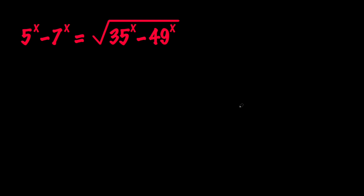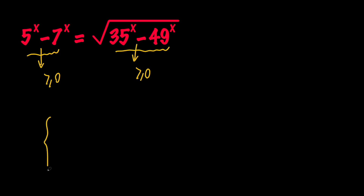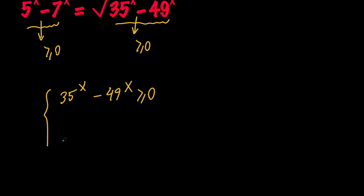So first of all, let's go ahead and start with the domain of this equation. Obviously, we want this expression to be non-negative, and the same thing is true for this one. So we have two restrictions: we want 35 to the x minus 49 to the x to be non-negative, and we want 5 to the x minus 7 to the x to be non-negative as well.